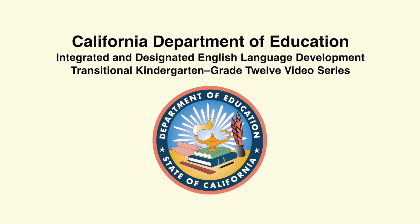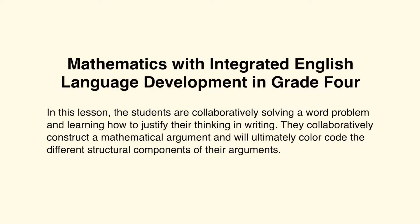Welcome to the California Department of Education Integrated and Designated English Language Development Transitional Kindergarten through Grade 12 video series. This segment covers Mathematics with Integrated English Language Development in Grade 4. In this lesson, students are collaboratively solving a word problem and learning how to justify their thinking in writing. They collaboratively construct a mathematical argument and will ultimately color code the different structural components of their arguments.